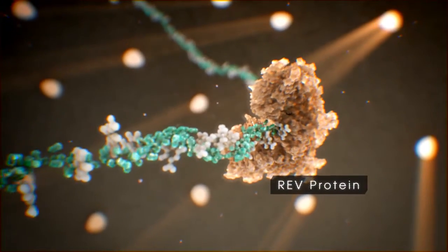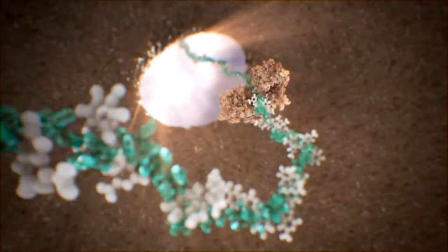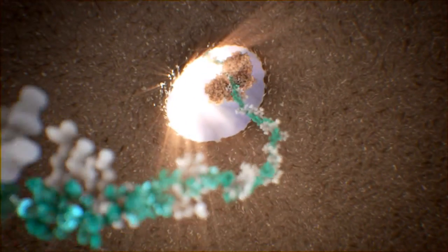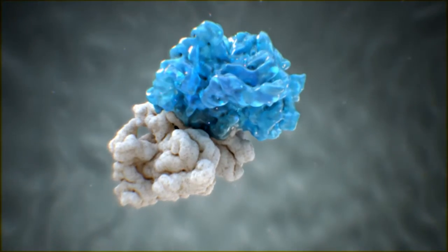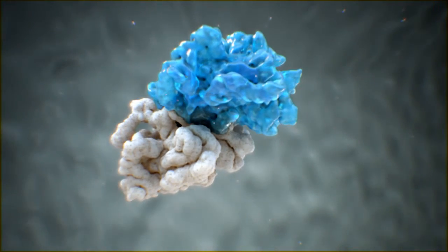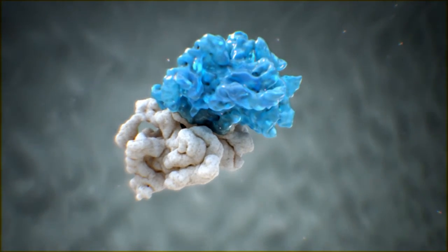The transport of viral RNA out of the nucleus is mediated by a viral protein called REV. Without REV, viral RNA stays in the nucleus and the production of viral protein and new viruses is prevented.